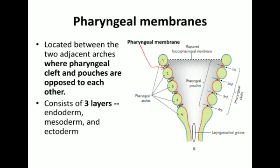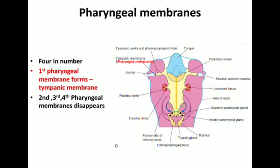Coming to the pharyngeal membrane — it is located in between two adjacent arches where the clefts and pouches oppose each other. Here you can see the black lining forming the pharyngeal membrane. It contains an ectodermal lining, an endodermal lining, and a minimal area of mesoderm from the arches. So the pharyngeal membrane is made up of three layers: ectoderm, mesoderm and endoderm. The first pharyngeal membrane will form the tympanic membrane, and the second, third and fourth pharyngeal membranes will disappear.